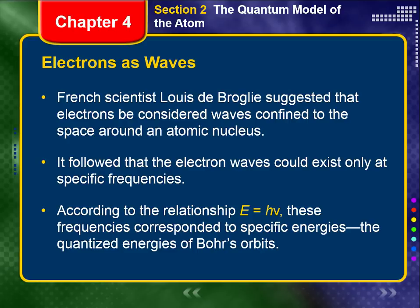The French scientist Louis de Broglie suggested that electrons be considered waves — but not just any old waves — confined to the space around an atomic nucleus. I want to repeat that again because that's the important part of the sentence. From this idea, being a wave confined to the space around an atomic nucleus, it followed that the electron waves could only exist at specific frequencies, meaning there are only certain frequencies that could exist.